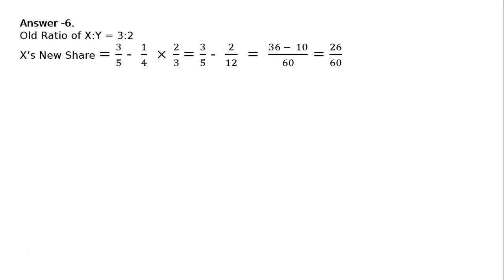Hence, out of this one-fourth share of Z, he is taking two-thirds of this from X and one-third from Y. That is 3 upon 5 minus 2, 1 to 2 upon 4, 3 to 12.